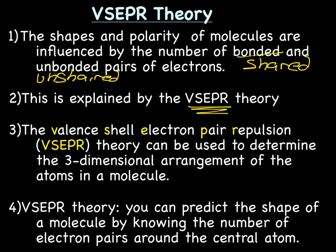The valence shell electron pair repulsion theory, or VSEPR, can be used to determine the 3D arrangement of atoms in a molecule. So VSEPR theory is you can predict the shape of a molecule by knowing the number of electron pairs around the central atom.